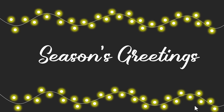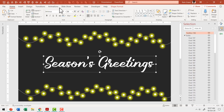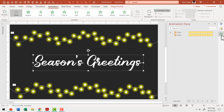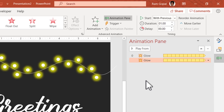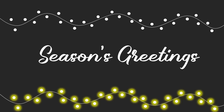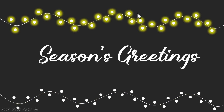Now let me show you some variations. Go to Animations and the Animation Pane — you can see two animations, one for the top line and one for the bottom line. Select the second line and add a delay of 0.5 seconds. Since the animation duration is one second, this creates a rhythmic alternating blink between the first and second lines — a nice variation.